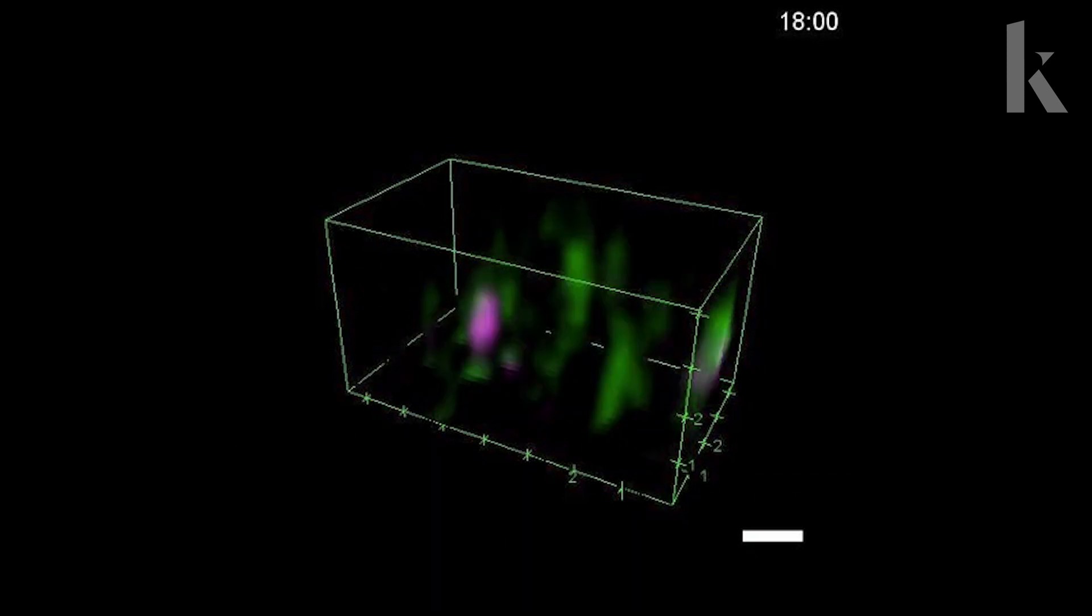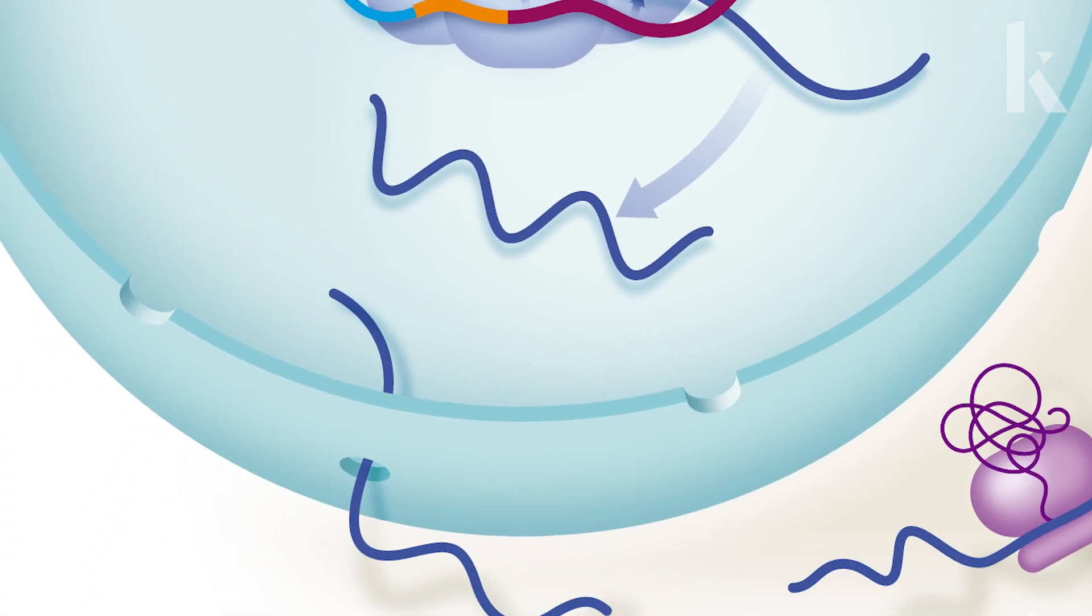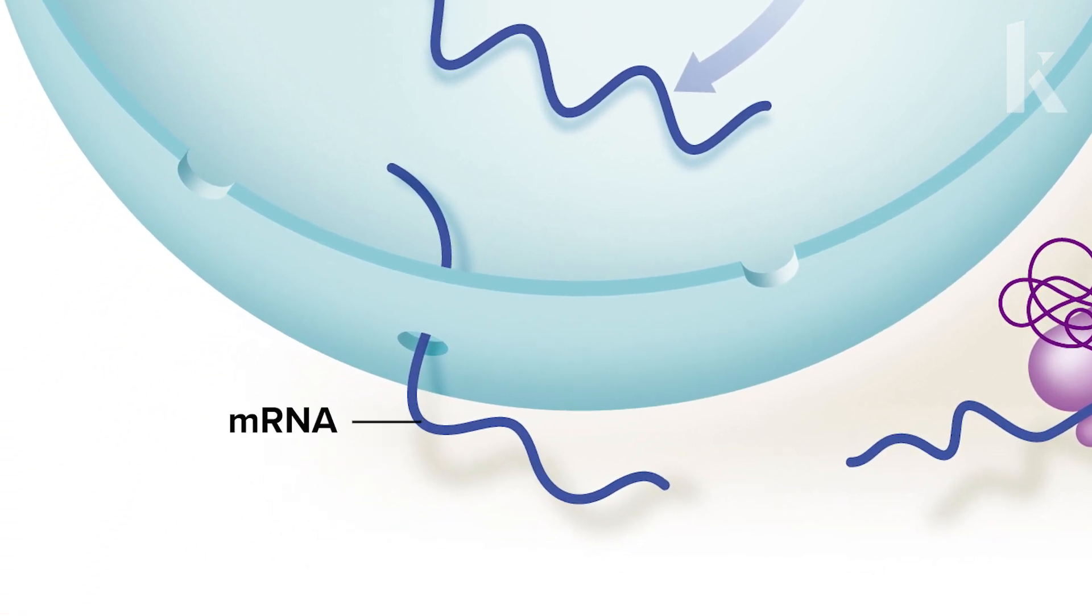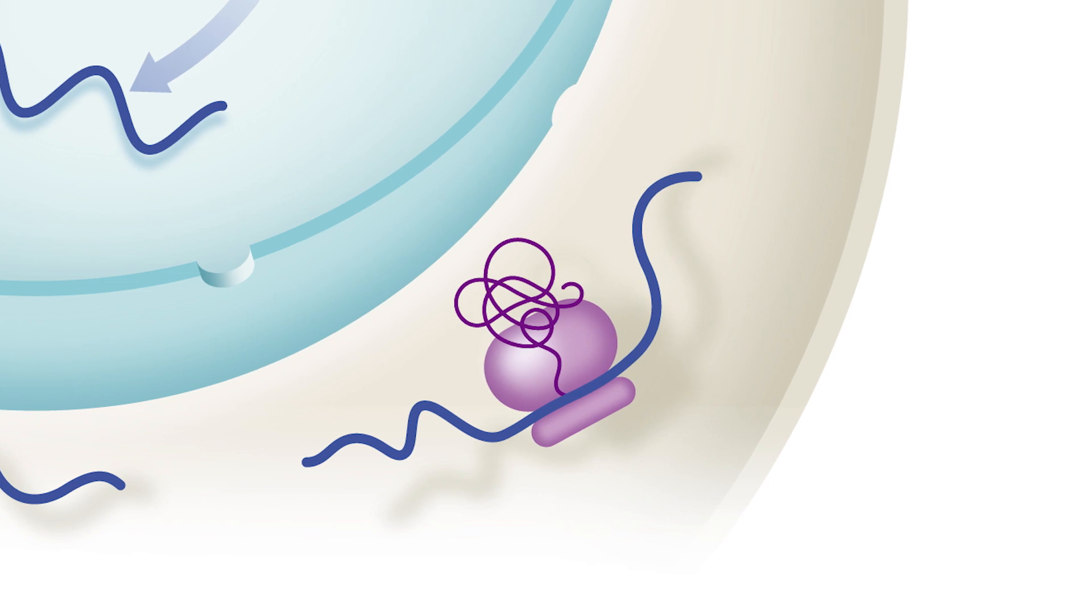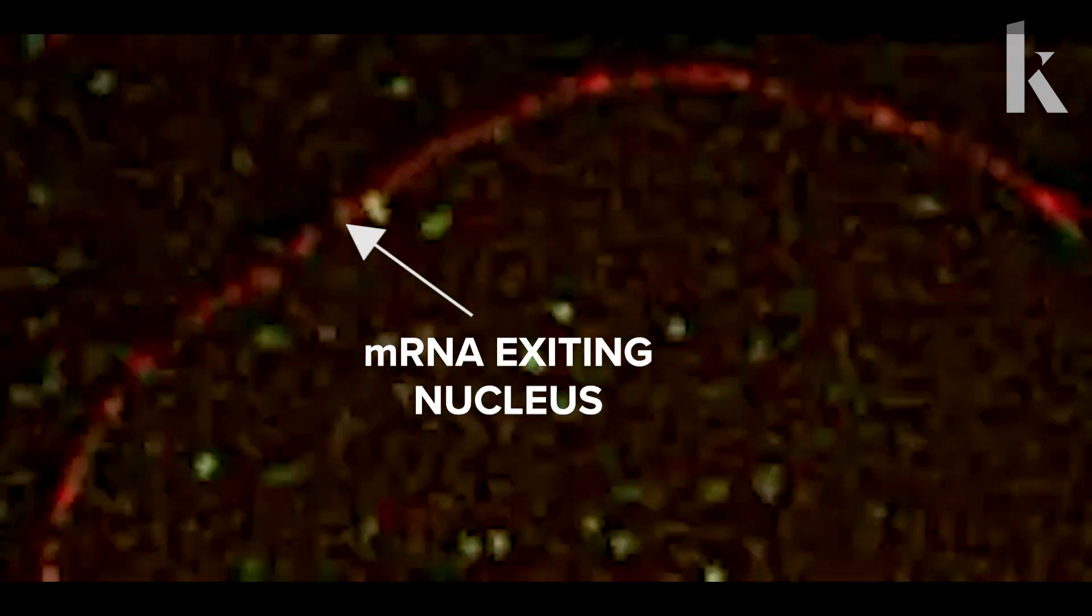Once mRNA is made, it needs to journey out of the cell's nucleus and into the cytoplasm. The cell will use the mRNA instructions to build a protein. Scientists used to think that mRNA was carefully transported, but it isn't. mRNA molecules bounce around until they find an exit.